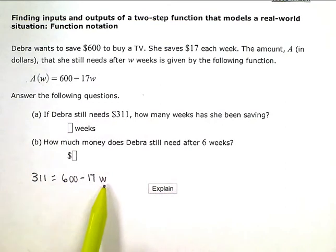She needs to save a total of $600. If she saves $17 a week, or take away what she's already saved, how much does she have left to save is the $311. So we're just going to solve this equation, get the w by itself.